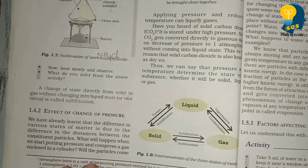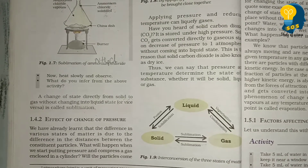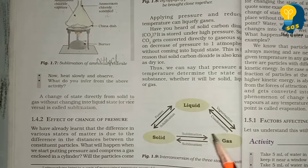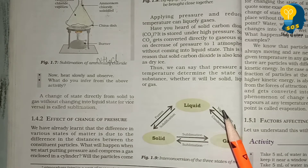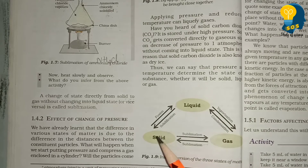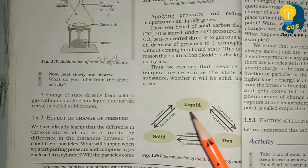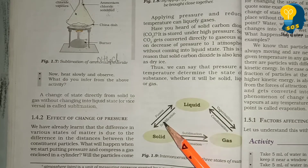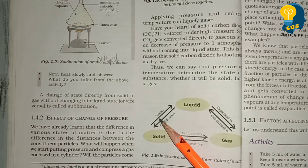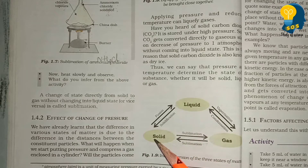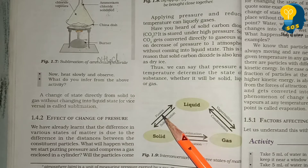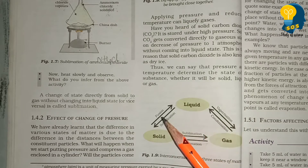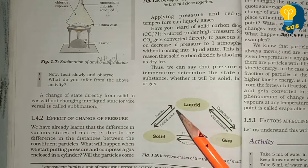Now let us understand a small flow chart representing the states of matter. By looking at this flow chart we can observe how matter can be interchanged. There are three states of matter: solid, liquid, and gas. Fusion is the process of conversion of solid to liquid — we call it fusion. Liquid to solid is called solidification — a process where liquid is converted into solid.